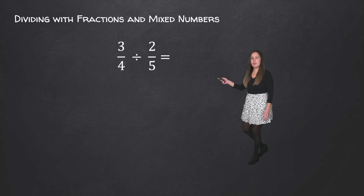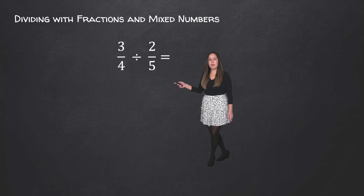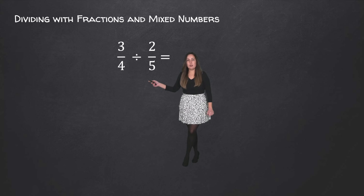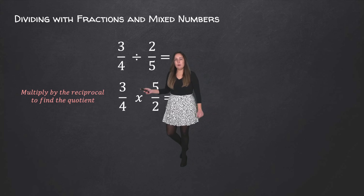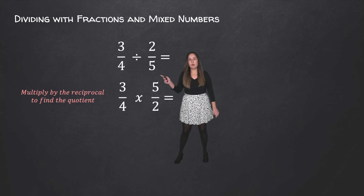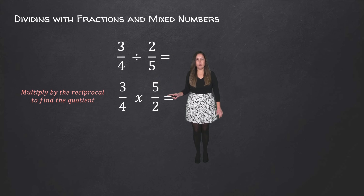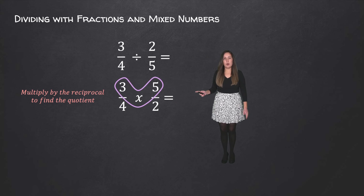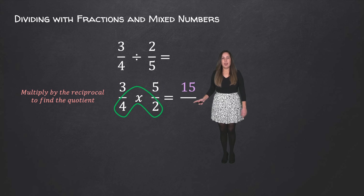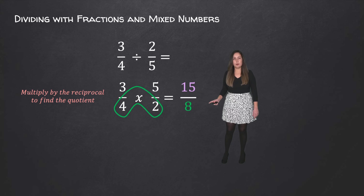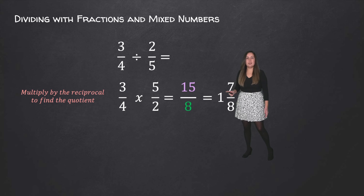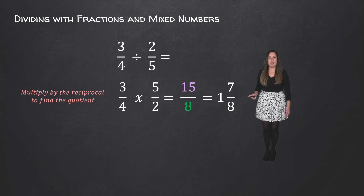Then we have another example: 3 fourths divided by 2 fifths. Both of these are fractions, so you can leave them as is. We're going to take the 3 fourths and multiply it by the reciprocal of 2 over 5, which is 5 over 2. Then we multiply normally: 3 times 5 is equal to 15, and 4 times 2 is equal to 8. 15 over 8 is an improper fraction that can be rewritten as 1 and 7 eighths.